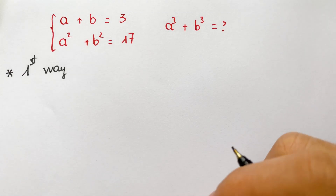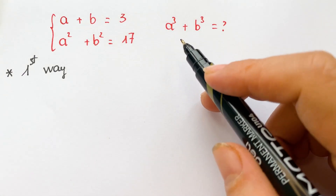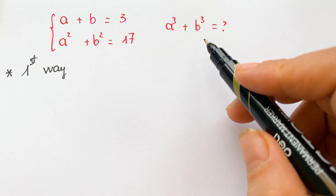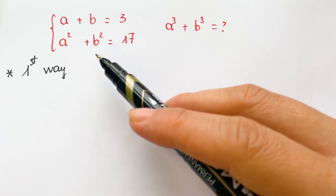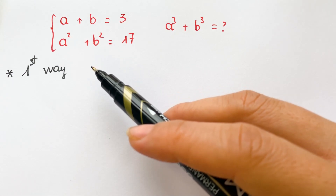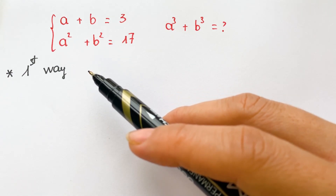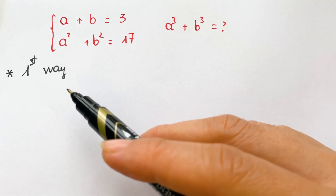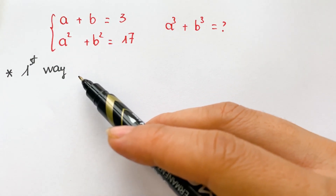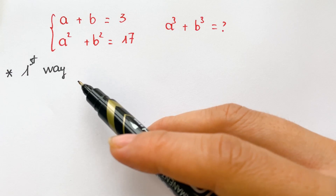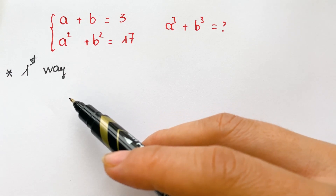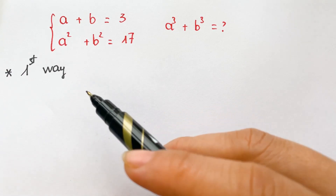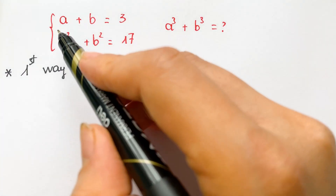Hello. How can we find a cube plus b cube from this system of equations? In this case, we can show 3 best ways to do that. For the first way, everyone can look at that.